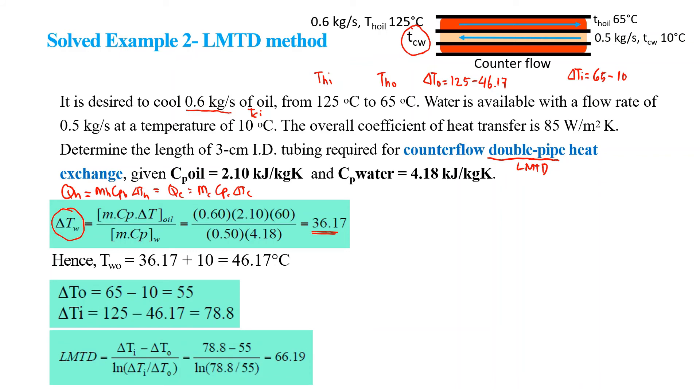We key in all of the numbers in the LMTD equation to end up with the logarithmic mean temperature difference of 66.19.